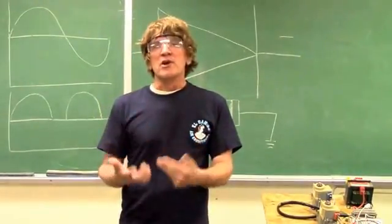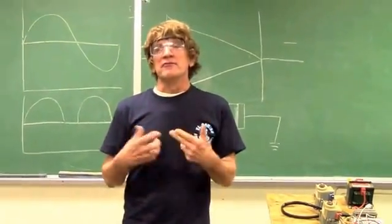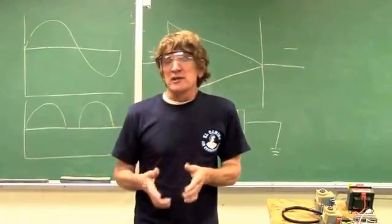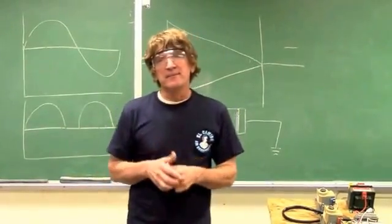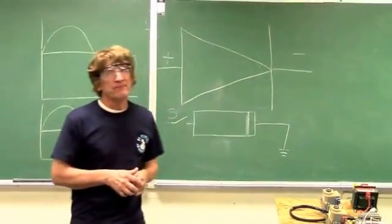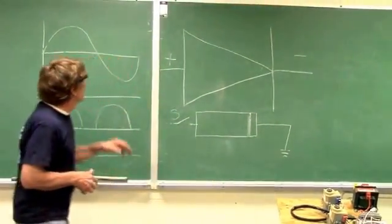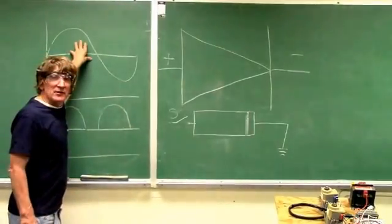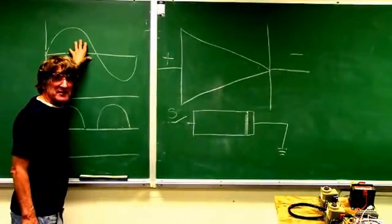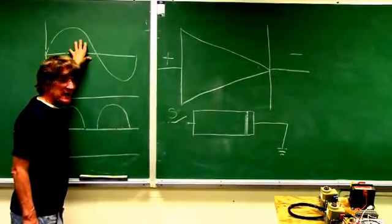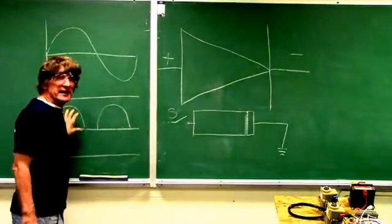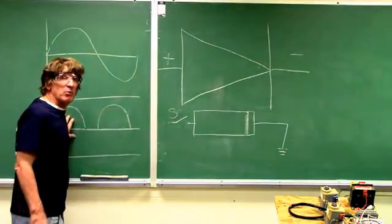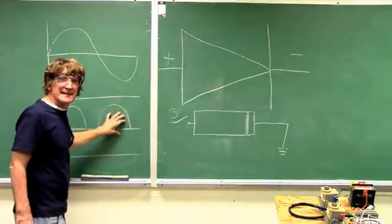We're going to talk about flame rectification. In flame rectification, I'm taking an AC signal that is being sent to the flame sensor and converting that to a DC signal — a pulsating DC signal.